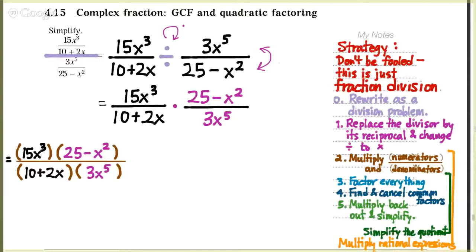We simplify it by factoring everything, because we need to know what to cancel. Any time I have a leading coefficient that's negative, I like to rewrite it by factoring out a negative sign. So instead of thinking of this as 25 minus x squared, I'm going to trade places with those two terms and factor out a factor of negative 1, so that negative goes out to the front of my expression.